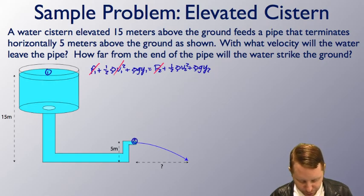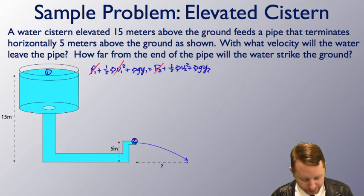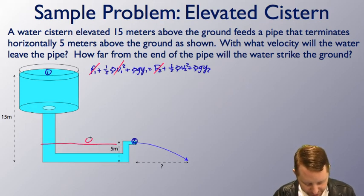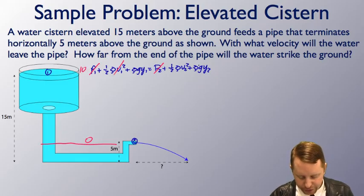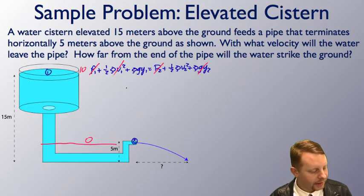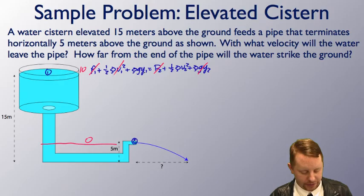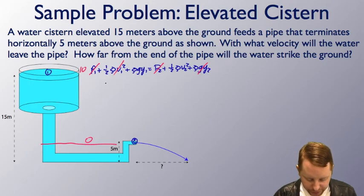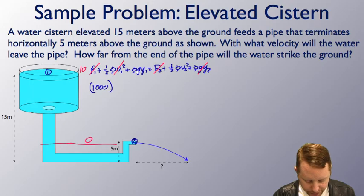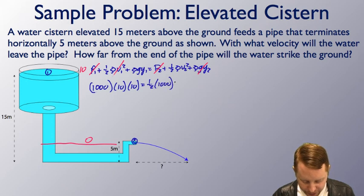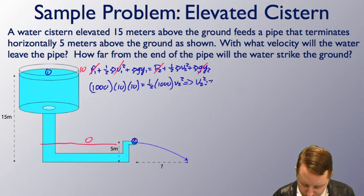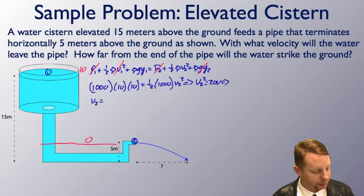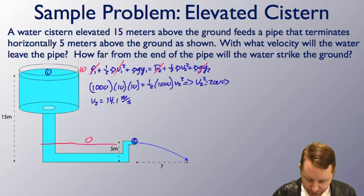And over here at this point, well, instead of looking at the difference of 15 meters and 5 meters, let's just say that we are at a height here of 0 and a height here of 10 meters. If we do that, then this term, y2 is 0, and that goes away. Now we've got rho gy1, where y1 is going to be 10 meters, the height of our region 1 above region 2, and v2 is what we're looking for. So rho 1,000 times g 10 times y1 must equal 1 half times rho 1,000 times v2 squared. Or, solving that, v2 squared must equal 200. Therefore, v2 would equal the square root of that, or about 14.1 meters per second.